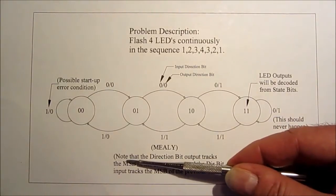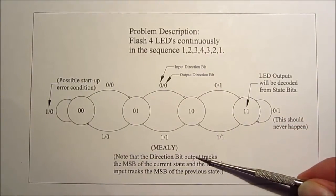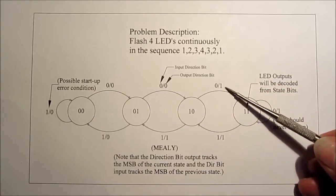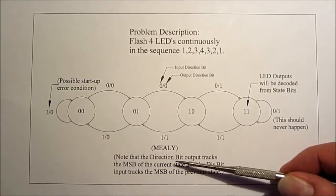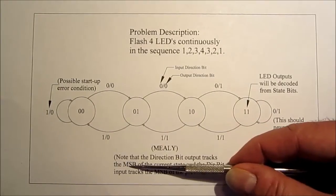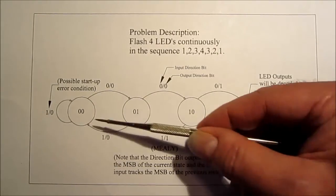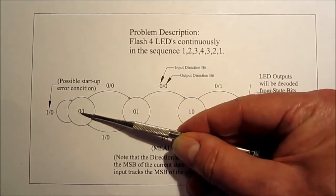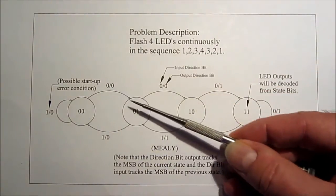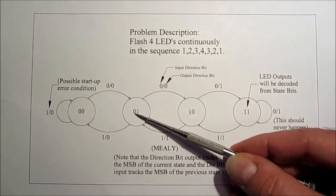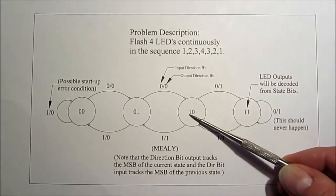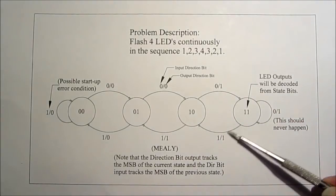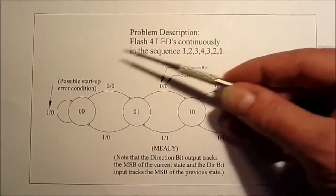I've decided that the four-state Mealy machine is more interesting to pursue. We can figure out how to handle the direction bit, and the LED outputs can be decoded through a two-to-four line decoder like a 74LS139, avoiding a lot of combinatorial logic. We can concentrate on the architecture, which is more intriguing. The direction bit output tracks the most significant bit of the current state — the state it just came from — and you can verify this pattern all the way around the state diagram.